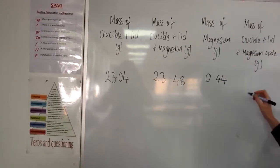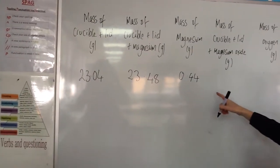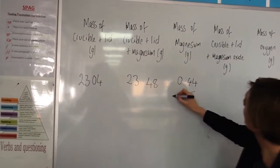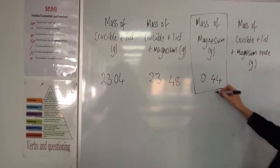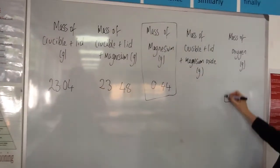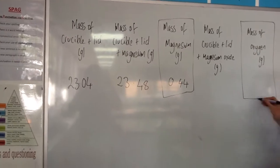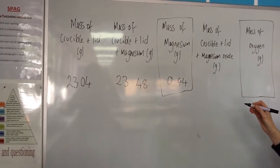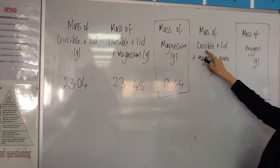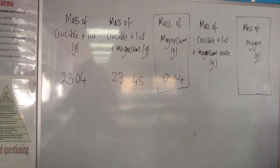So we've got some of the information that we need to calculate the empirical formula. We've got the mass of the magnesium but we also need the mass of the oxygen. So to do that we need to find out the mass of the crucible, the lid and the magnesium oxide.